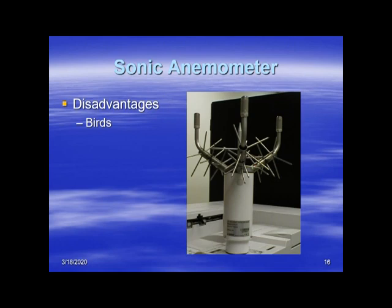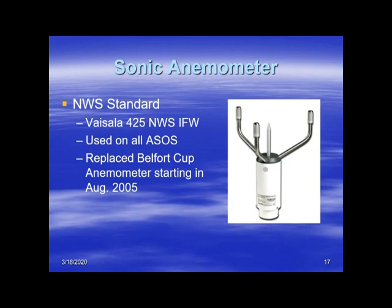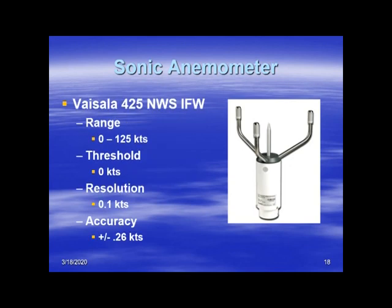The National Weather Service transitioned over in 2005 to sonic anemometers. They use a Vaisala 425 National Weather Service ice-free wind sensor, which is standard on all ASOS stations across the United States. The Vaisala 425 has a range of 0 to 125 knots, a threshold wind speed of 0, resolution down to one-tenth of a knot, and an accuracy of about a quarter of a knot.